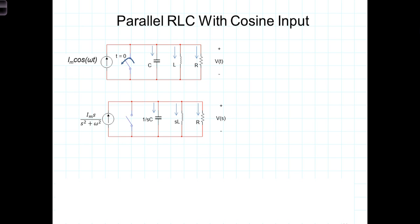Let's now look at this same parallel RLC circuit, only this time we're going to analyze it with a cosine input that's applied at t equals 0. The previous example had a DC source applied at t equals 0, so we were looking at the step response there. We're going to find the Laplace analysis will give us both the transient and the steady state response for this sudden application of the cosine.